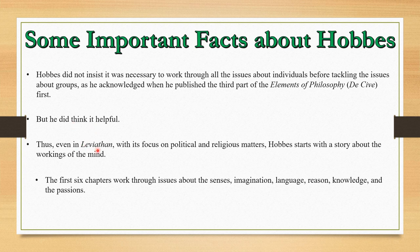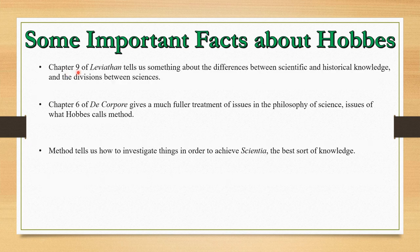At an abstract level, the Elements of Law, the Elements of Philosophy, and Leviathan all share a structure. Hobbes thinks we will better understand how individuals interact in groups if we understand how individuals work. He did not insist it was necessary to work through all the issues about individuals before tackling issues about groups, but he did think it helpful. Thus, even in Leviathan, Hobbes starts with a story about the working of the mind — the first six chapters work through issues about the senses, imagination, language, reason, knowledge, and passions.